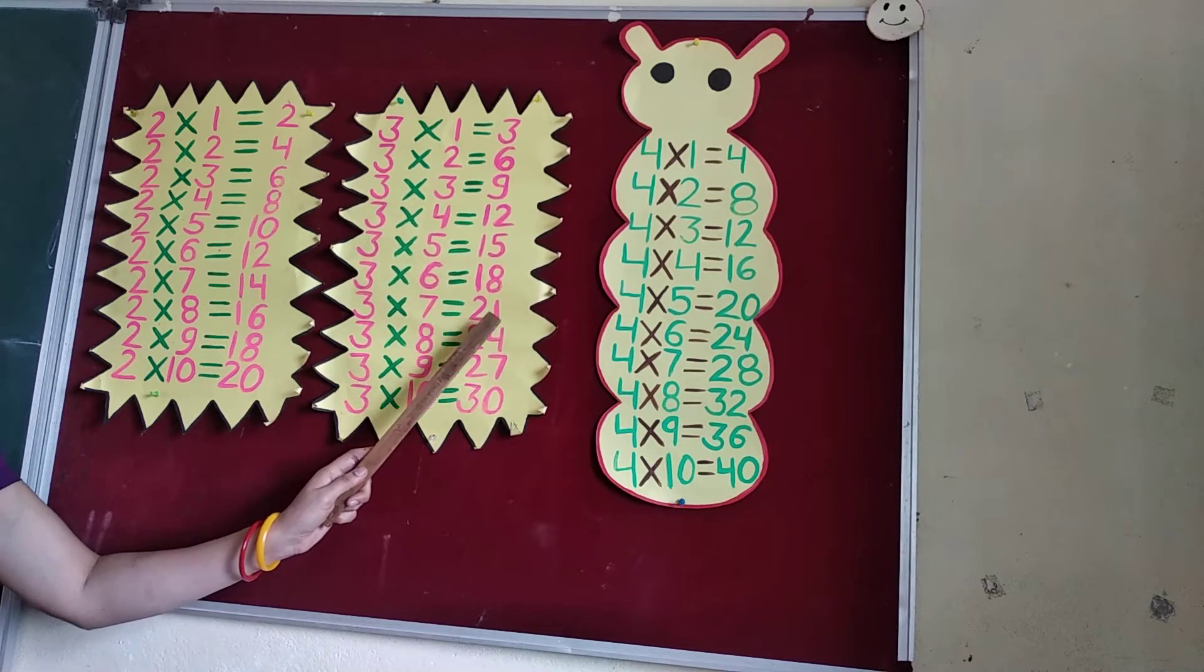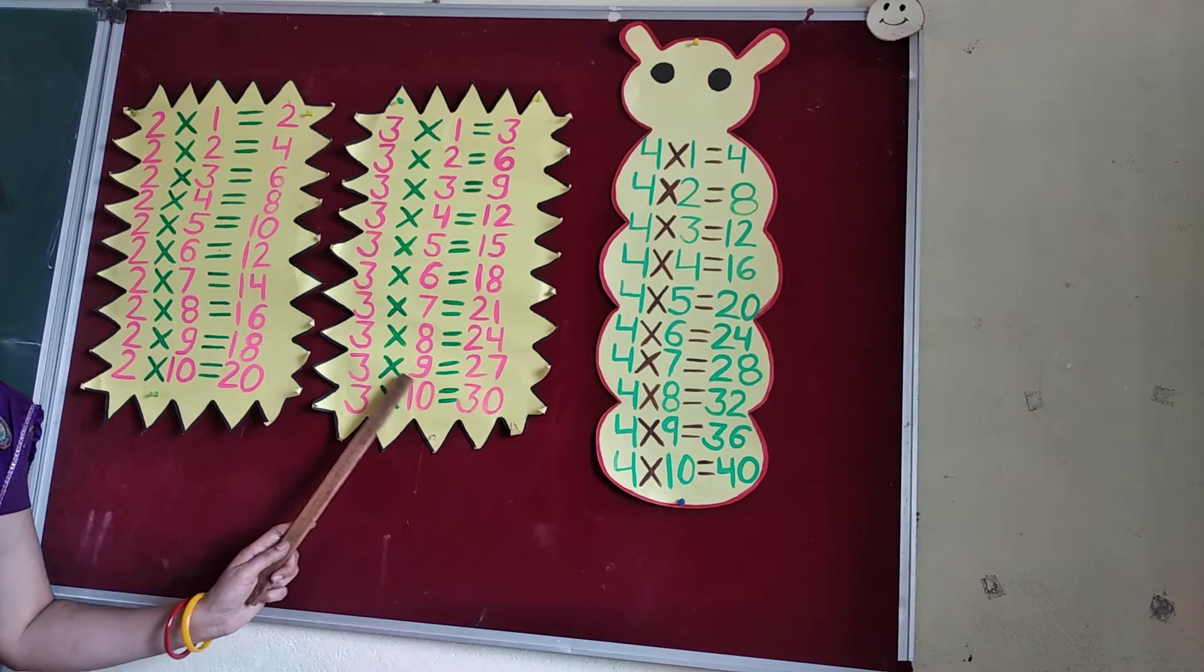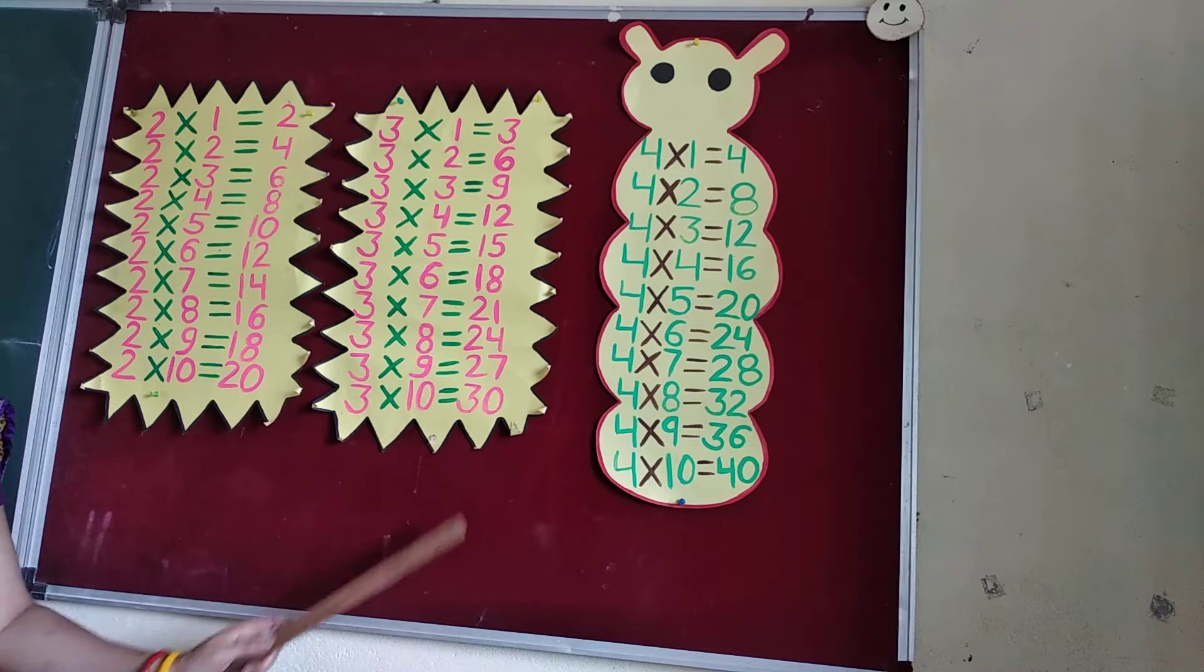3 7's are 21. 3 8's are 24. 3 9's are 27. 3 10's are 30. Now table of 4.